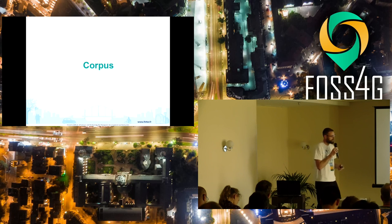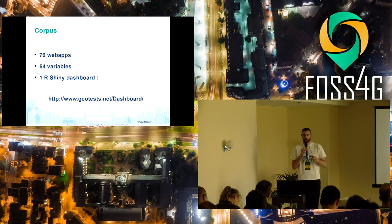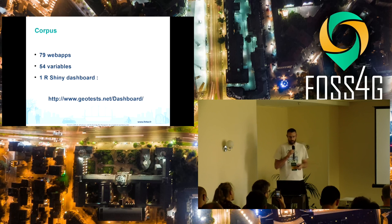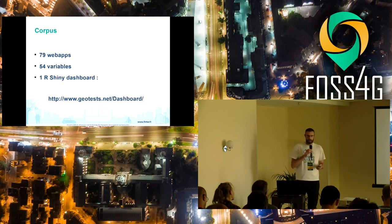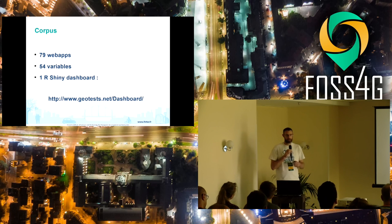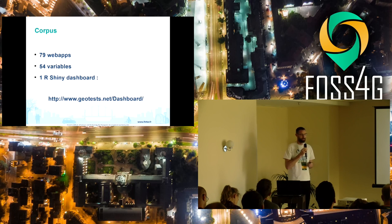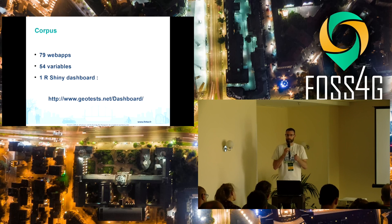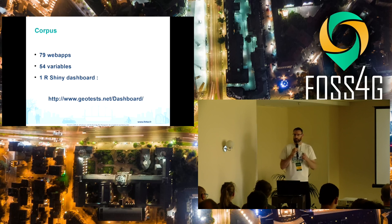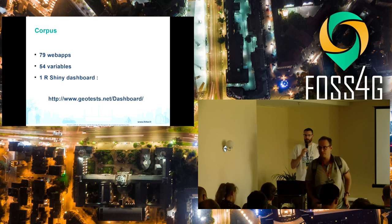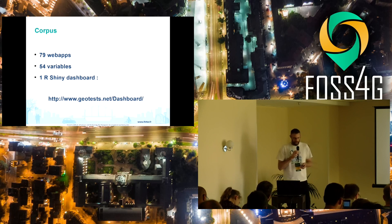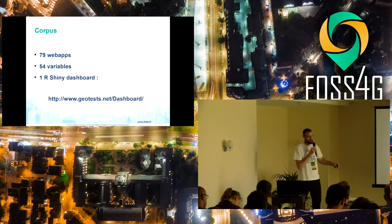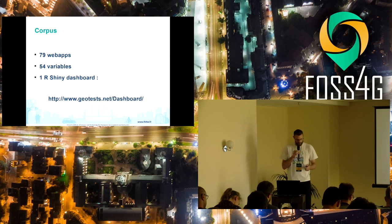First, I will speak about the corpus. We gathered information about 79 web applications available for flow maps and this kind of application, covering about 54 variables — so it's a pretty exhaustive review. The purpose was to get a state-of-the-art overview of what is available in web applications for doing flow maps. We gathered it in a dashboard developed with R-Shiny, which is already available at a public URL.